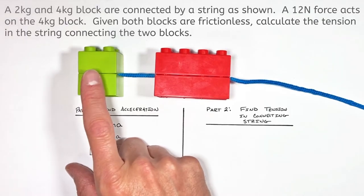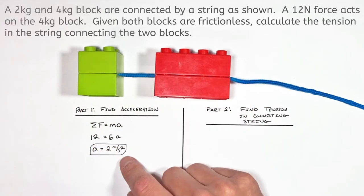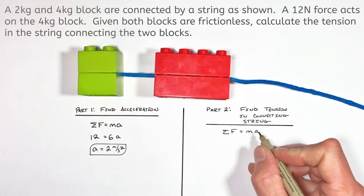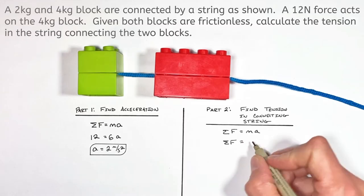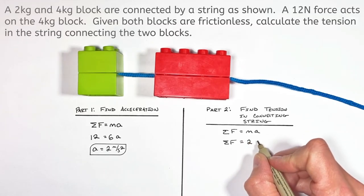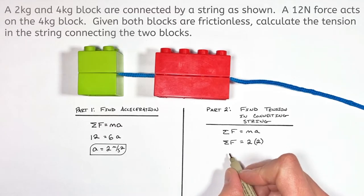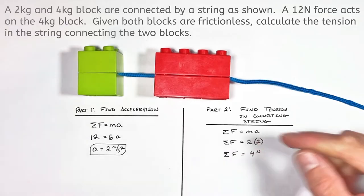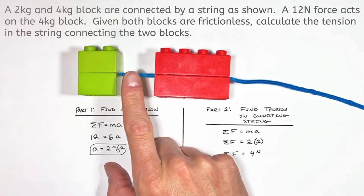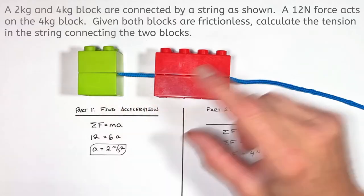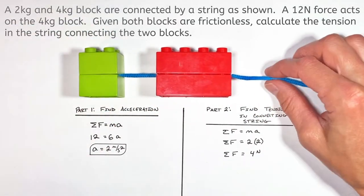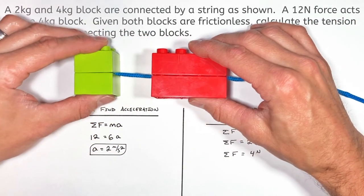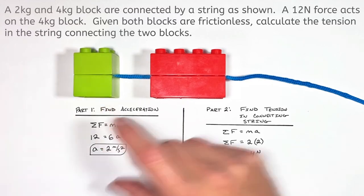If we know this green block is going to accelerate to the right at 2 meters per second squared, then we can solve for the net force on this block. Again using Newton's second law, we know the 2 kilogram block is going to accelerate at a rate of 2 meters per second squared. So the net force on the green block is 4 Newtons. Now the net force is 4 Newtons, but how does that relate to the tension in this string? It's easy to get confused because we have two different pull forces here — there's the pull force from actually yanking on the string with 12 Newtons, and then suddenly we're seeing this net force of 4 Newtons acting on the block.